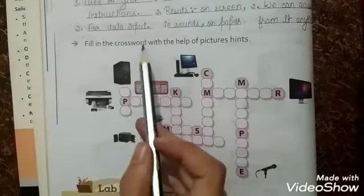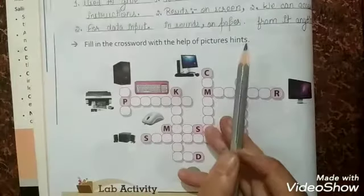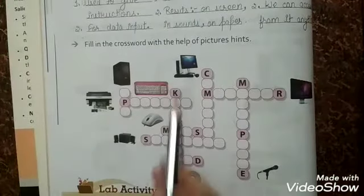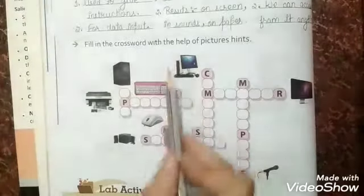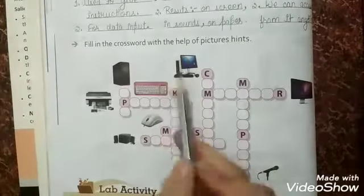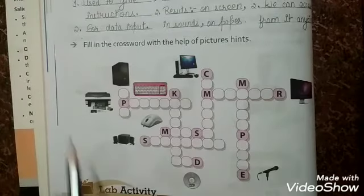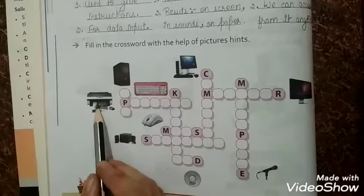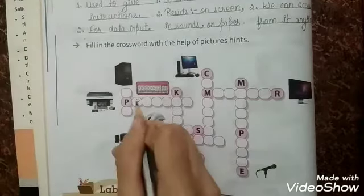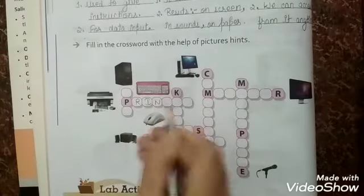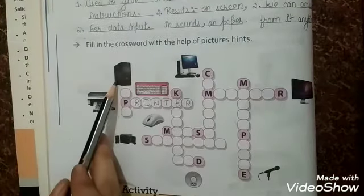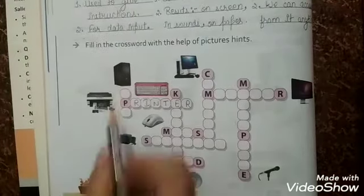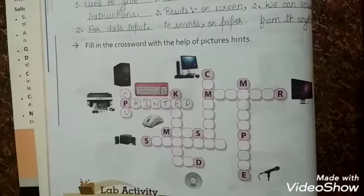Now the next exercise is to fill in the crossword with the help of pictures. We have to fill this crossword using the picture hints. The first picture is our printer — spelling: P-R-I-N-T-E-R. The second one is CPU — C-P-U.